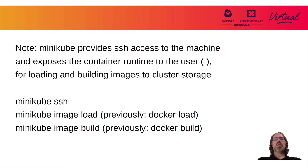Worth noting is that Minikube not only provides Kubernetes access, but also SSH access to the machine, and even exposes the container runtime to the user — for instance, for loading and building images. Traditionally, this was done by a command called docker-env that gave you access to the Docker daemon running on the machine. In later versions, we have bundled this in a minikube image command to make it agnostic to the different container runtimes, with an image load and an image build command.